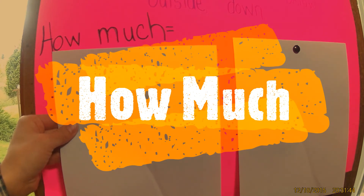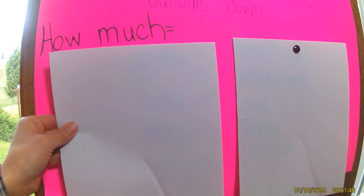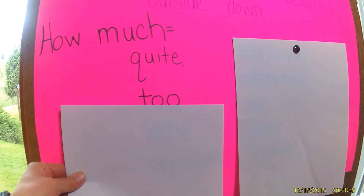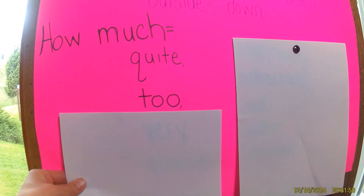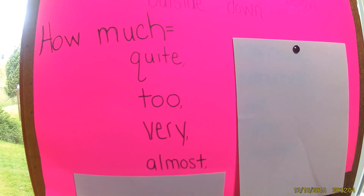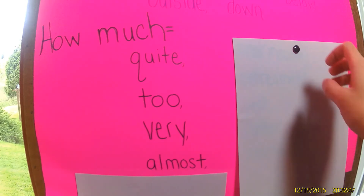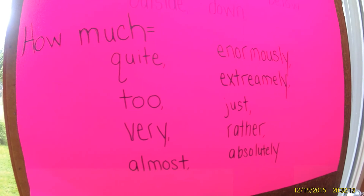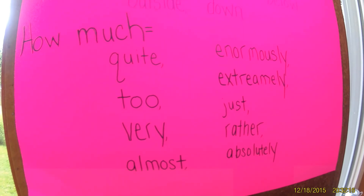Adverbs also tell us how much or to what extent something is done. Some words we can use for that are quite — like I've had quite enough — too, I've had too much, very, very often, or almost. Some more words to describe how much something happens are enormously, extremely, just, rather, absolutely. These are just a few words to show us what adverbs might look like. Can you think of any more on your own?